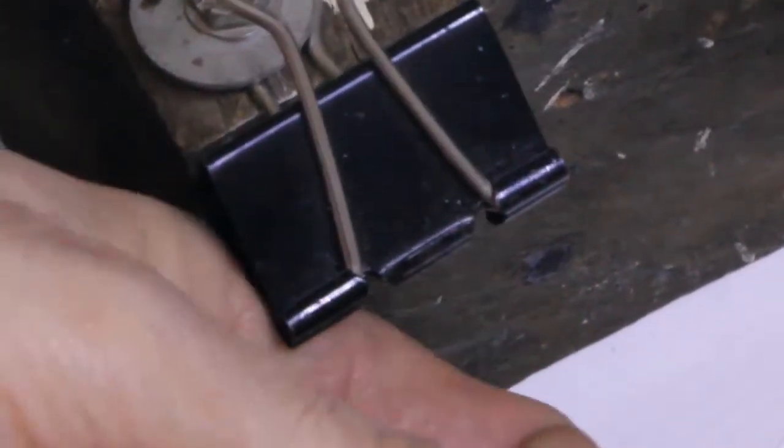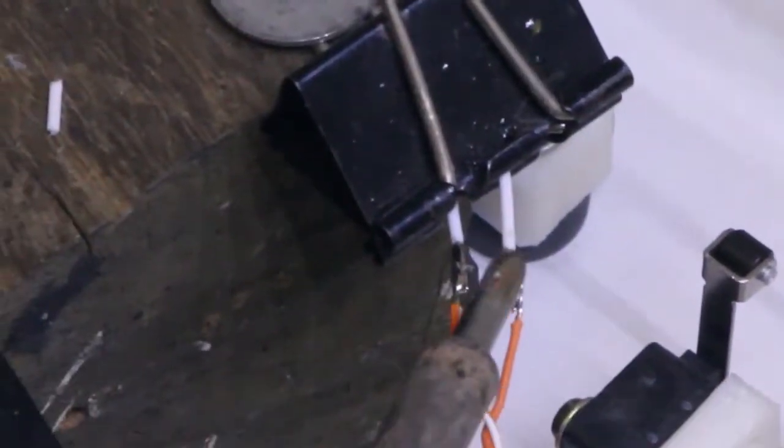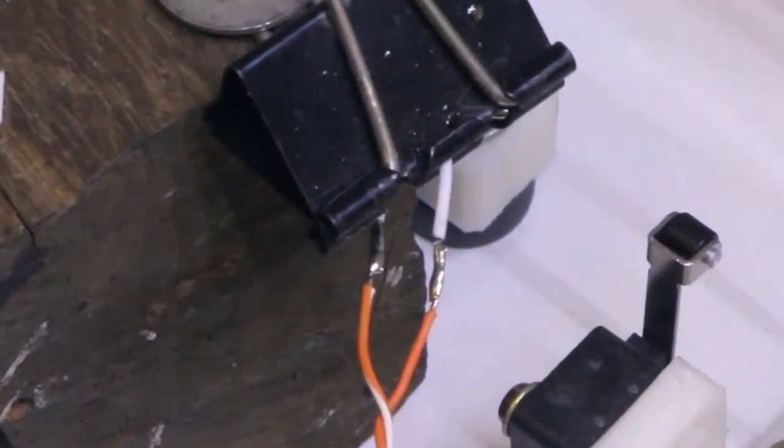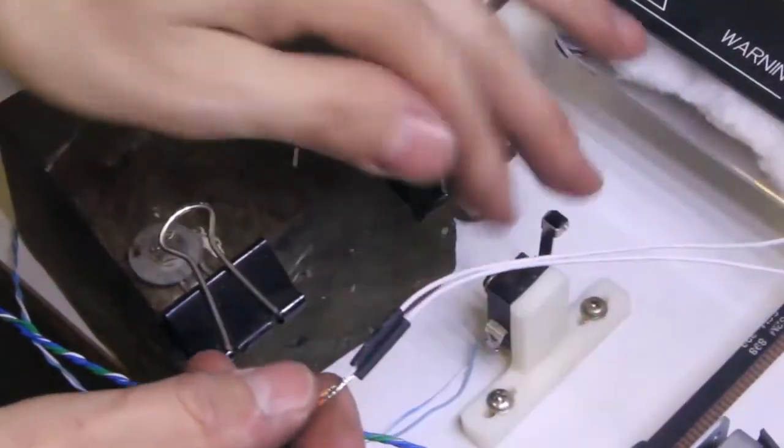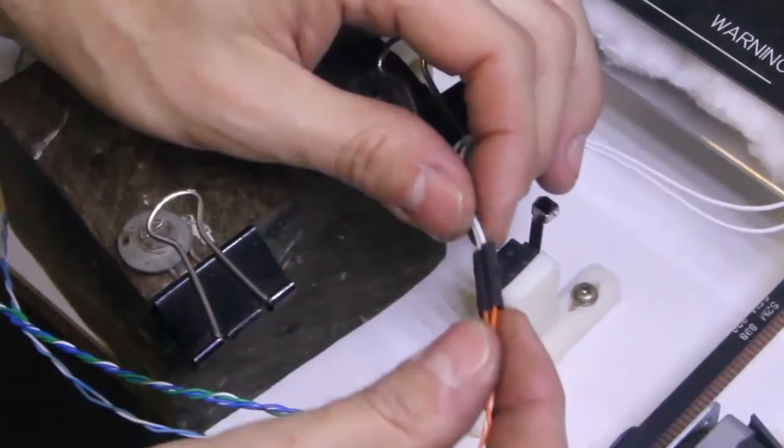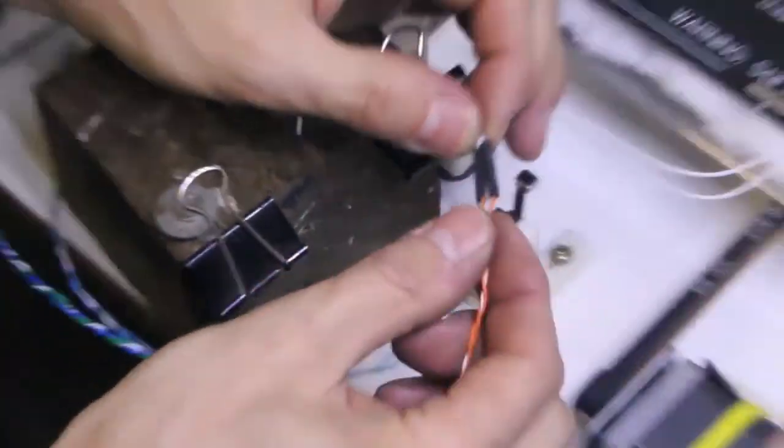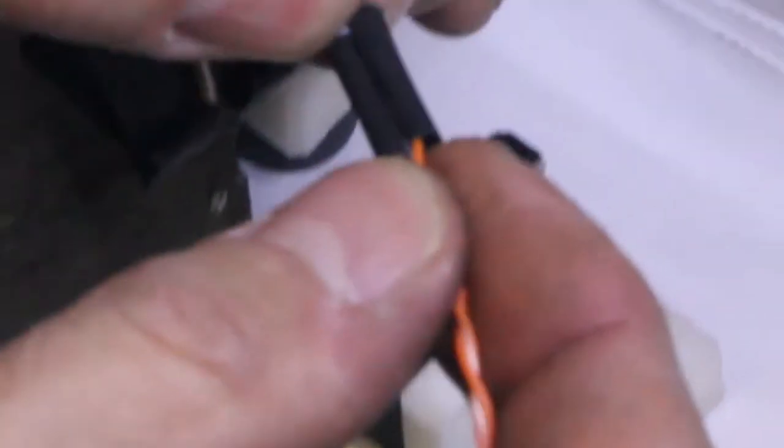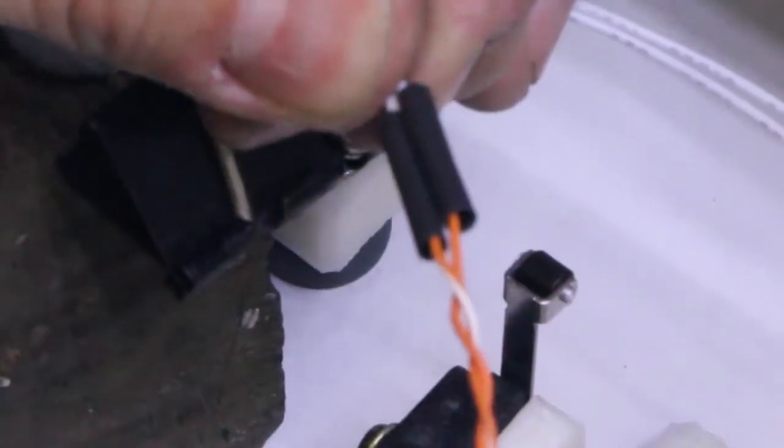The same for the other wire. Put your heat shrink over, making sure you've covered the exposed wires. You don't want any exposed wires sticking out.